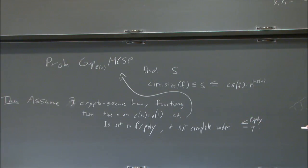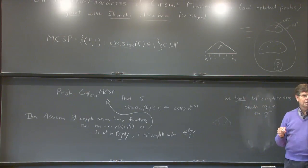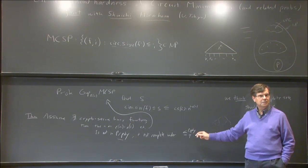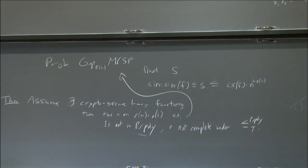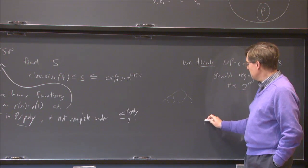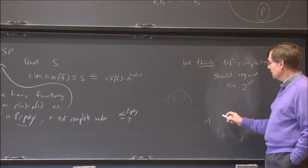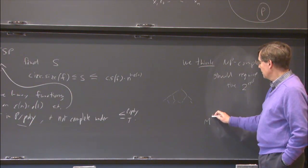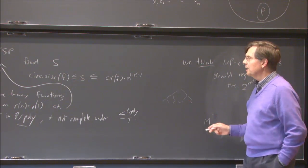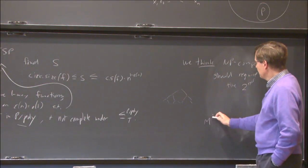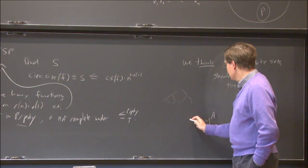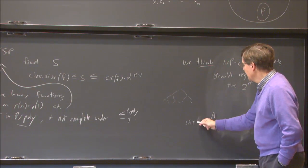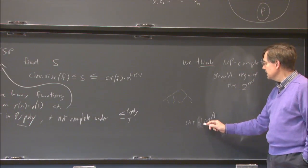P-poly is the class of things that have polynomial-sized circuits. A Turing reduction involves a machine with an oracle that it can call as a subroutine for free. If it's a polynomial time machine with oracle A — where A here is going to be some solution to this minimization problem — that's the type of reduction we're talking about. We're talking about an NP-complete problem like SAT not being solvable by this machine with oracle A.